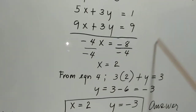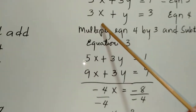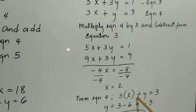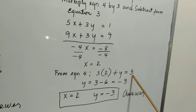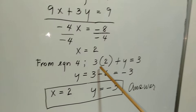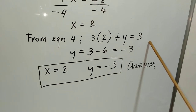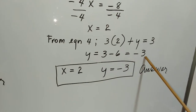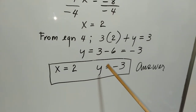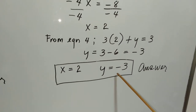Substituting x equals 2 into equation 4: 3 times 2 plus y equals 3, so 6 plus y equals 3. Transposing, y equals 3 minus 6, which gives y equals negative 3. The answers for problem 2 are x equals 2 and y equals negative 3.